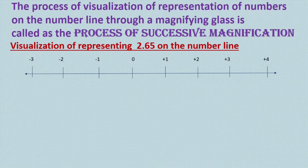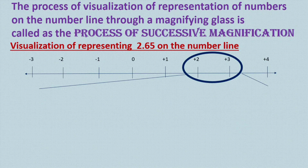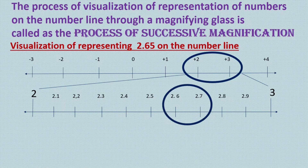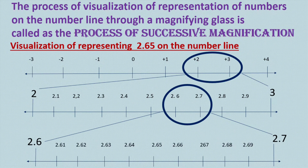Let's take an example for the visualization of representing 2.65 on the number line. To locate 2.65, we first focus between 2 and 3 on the number line, as it lies between 2 and 3. Again, by dividing the number line into 10 subdivisions, we focus between 2.6 and 2.7. Repeating the same process by dividing into 10 subdivisions again, we locate 2.65 on the number line between 2.6 and 2.7.